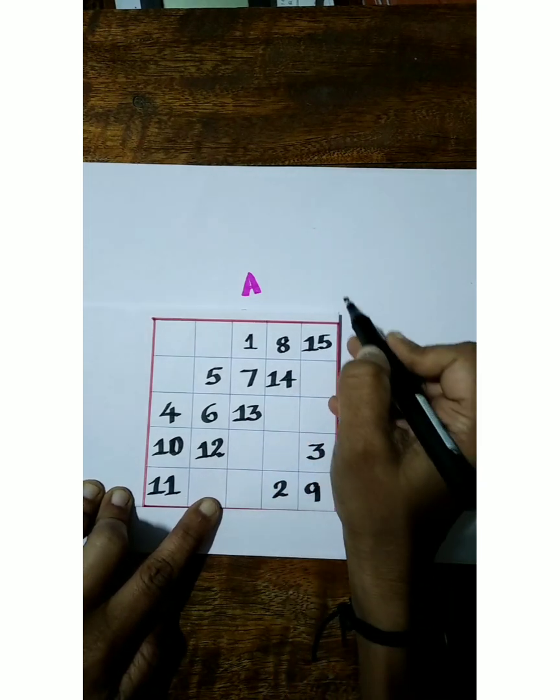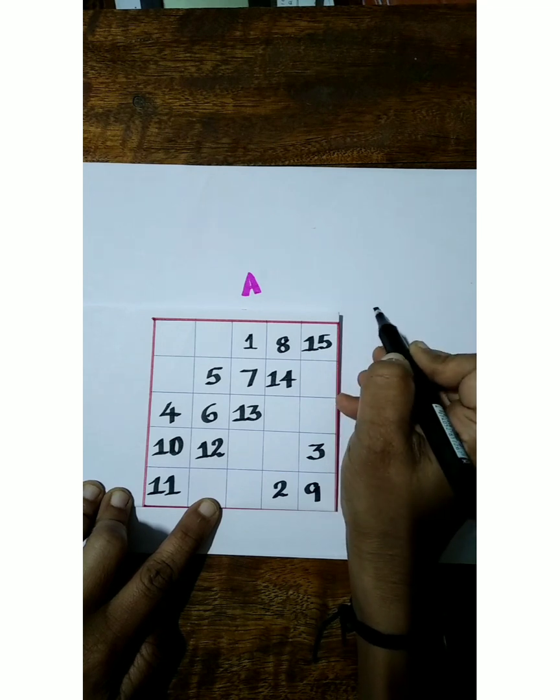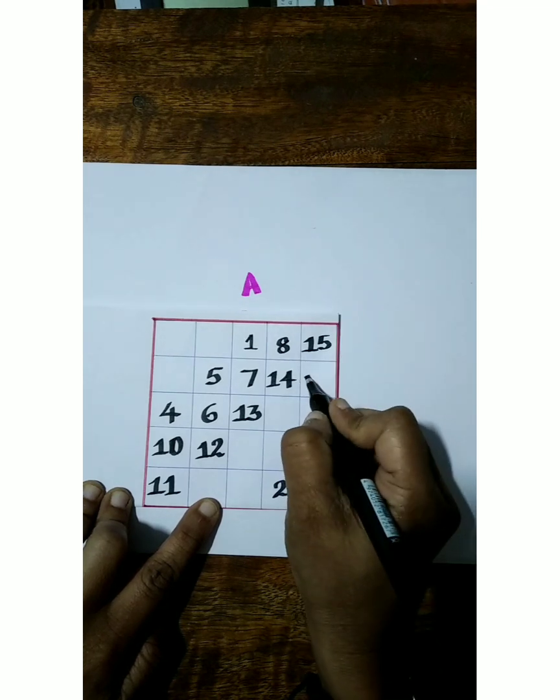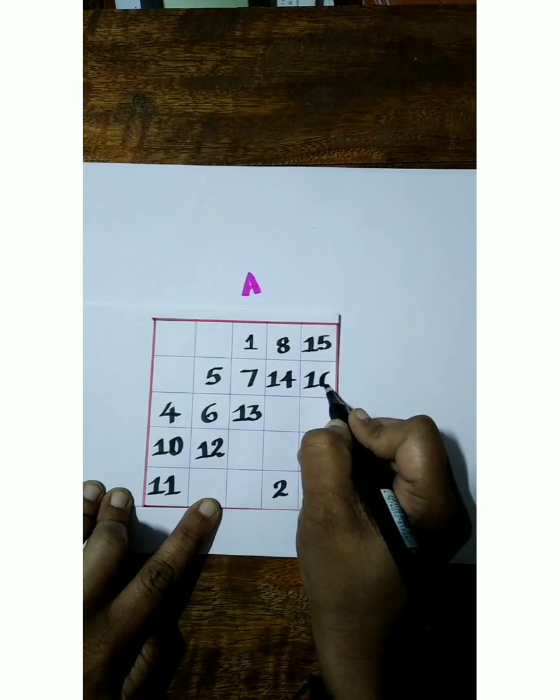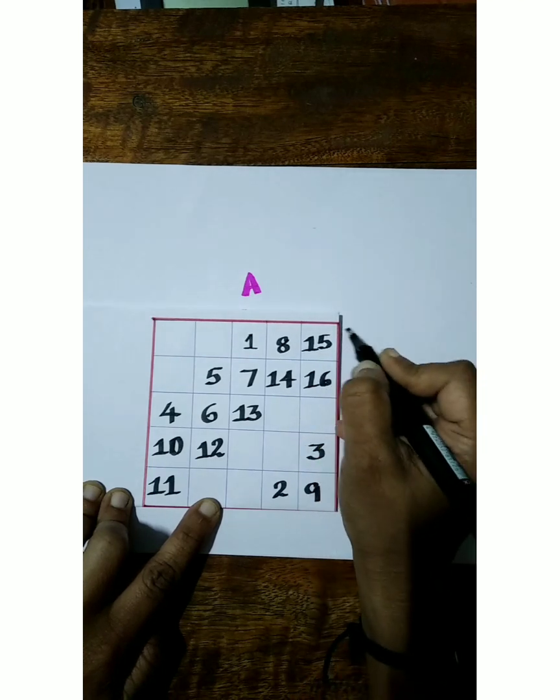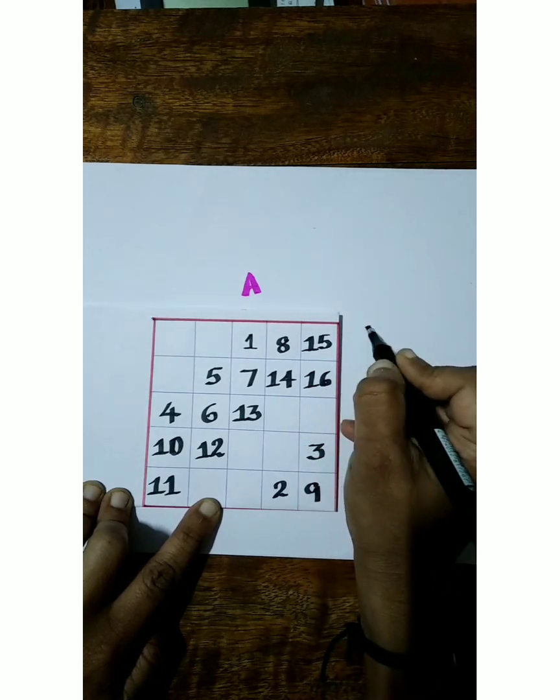Now diagonal of this box is here. We have to write here 16, but there is no box. So just write below of that 15, 16. Now diagonal box is here 17. Here also no box. Just move to row end and write here 17. And here diagonal box 18, but there is no box. So move to column end and write here 18.